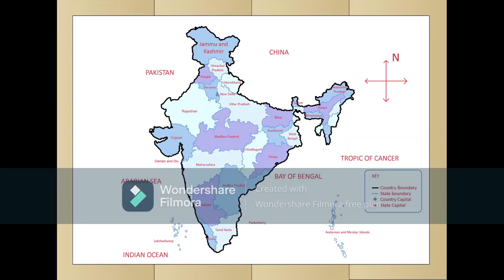Here you can see a map of India. In this map, the four directions are mentioned. You can see the top side of India is North and the down part of India is South. The right side is East and the left side is West.